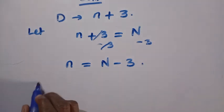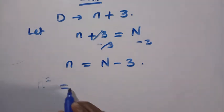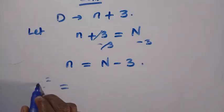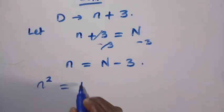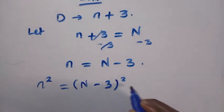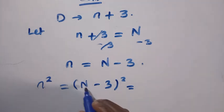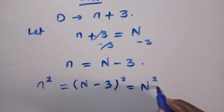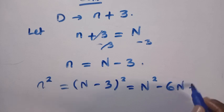And here we have n = N - 3. So what we do is, we need to find n². So to get n², we are going to take the square of (N - 3)². So having this, when we expand (N - 3)², we get N² - 6N + 9.